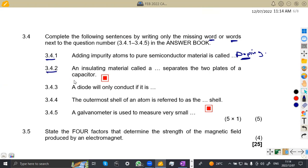3.4.2, an insulating material called dielectric separates the two plates of a capacitor. Which insulating material is that? That's a dielectric. A dielectric separates the two plates of a capacitor. It will be in between. Then 3.4.3, a diode will only conduct if it is forward biased.